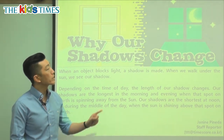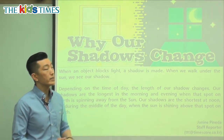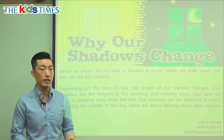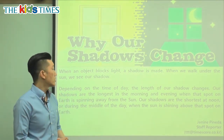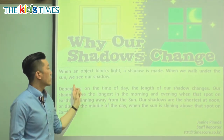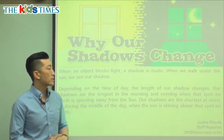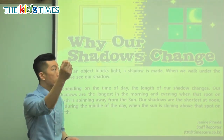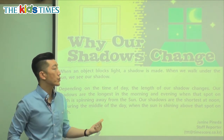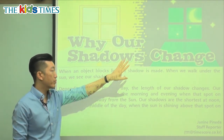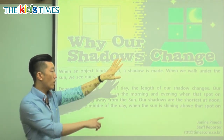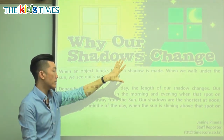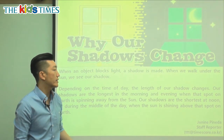We can see day and night, and our shadows change as time moves. When an object blocks light, a shadow is made. For example, the light is coming onto the screen. So if I block the light, it causes a shadow — you can see the shadow of my hand.